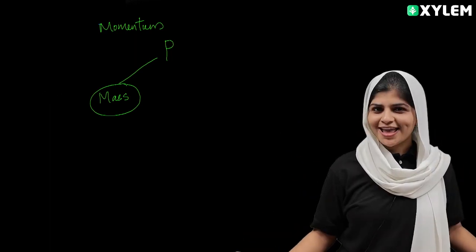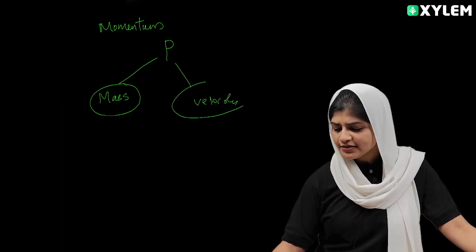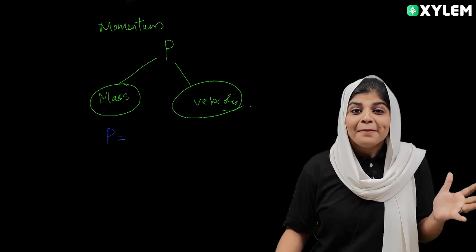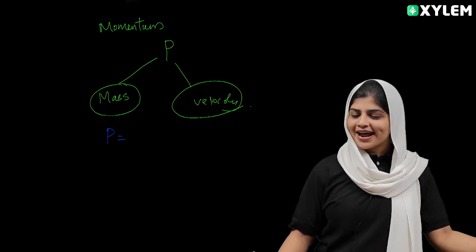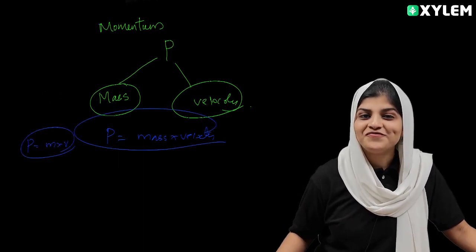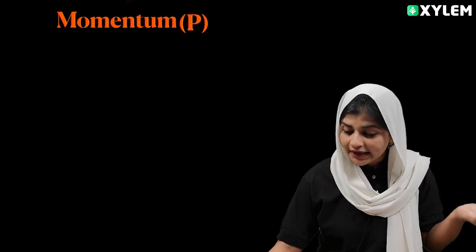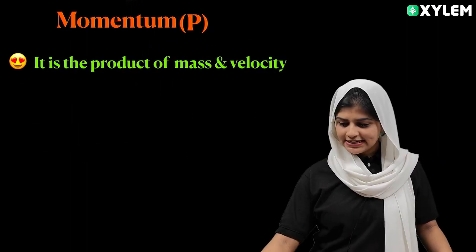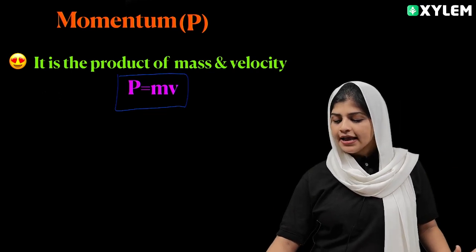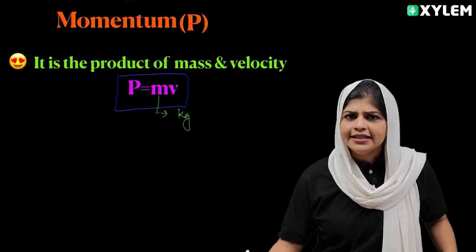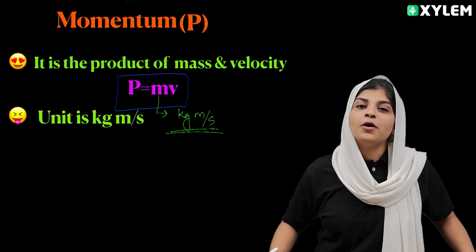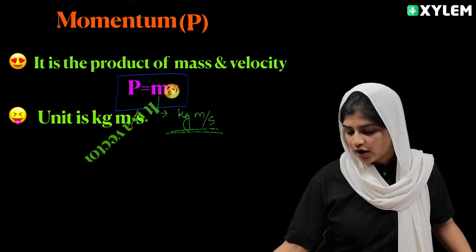Impact also depends on the velocity. So we can write momentum as mass into velocity — p is equal to m into v. Momentum is denoted by the letter p, and it is the product of mass and velocity: p = mv. The unit of mass is kilogram, the unit of velocity is meter per second, so the unit of momentum is kilogram meter per second. It is also a vector quantity.